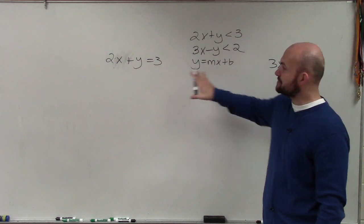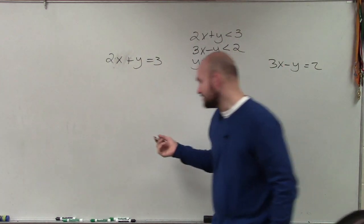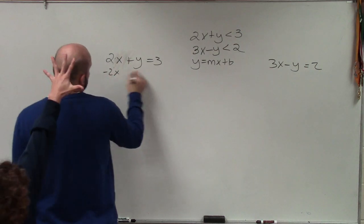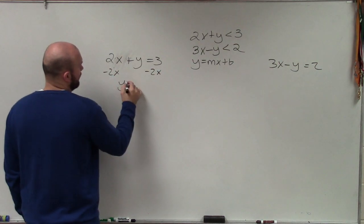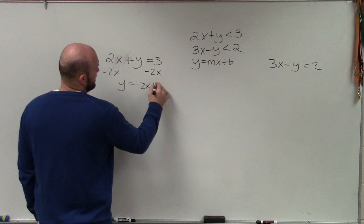So I set them as equations, so now I can rewrite this in slope-intercept form. So to do that, I subtract 2x on both sides, and I get y equals negative 2x plus 3.